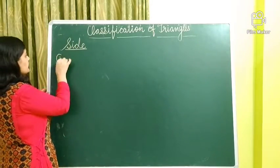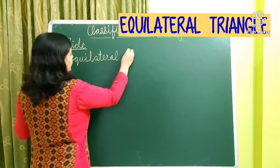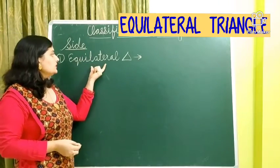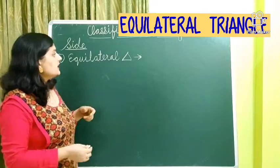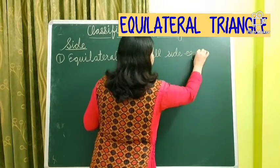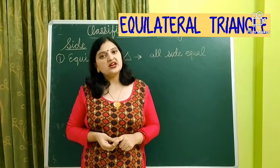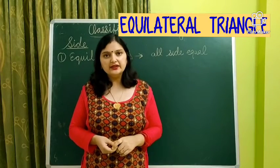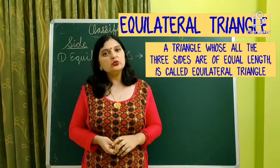The first is equilateral triangle. Now, if you look at this word, there exists the word 'equal.' Equal means a triangle having all sides equal in length. Such type of triangles are called equilateral triangles. So once again, a triangle having all three sides equal in length is called an equilateral triangle.